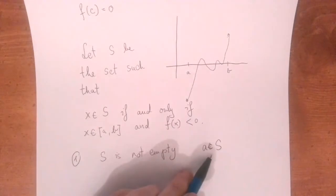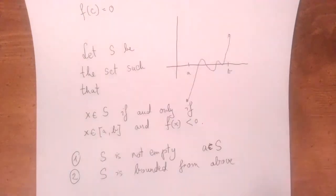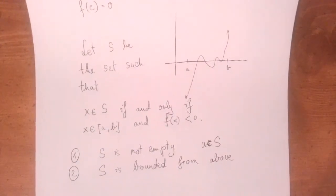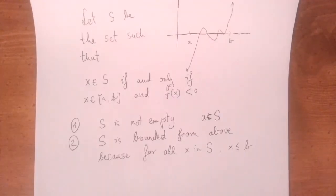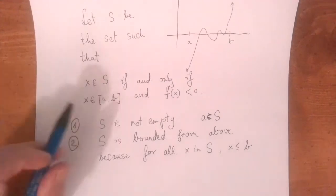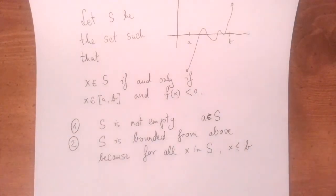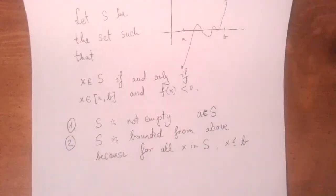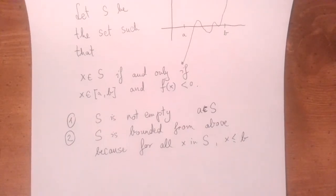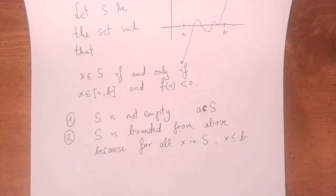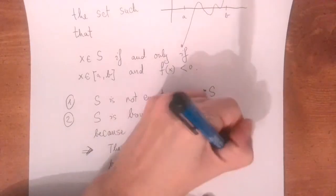The symbol means 'element of' or 'belongs to.' Second, S is bounded from above because b is a very natural choice for an upper bound. S is contained within the interval a, b, so no numbers greater than b are in this set. So we have a non-empty set that is bounded from above. By the least upper bound property, this set has a least upper bound — let's call it c.